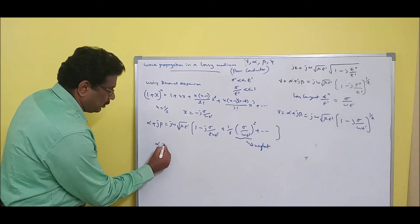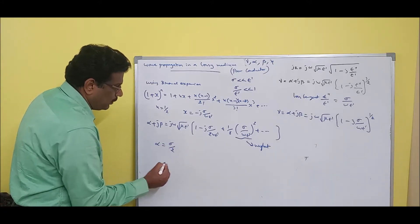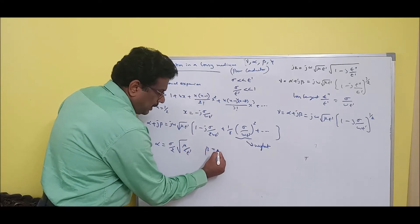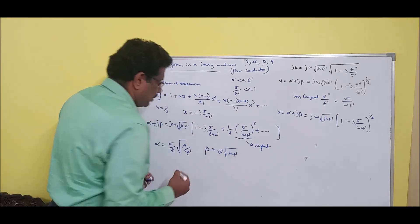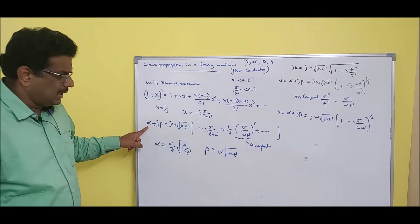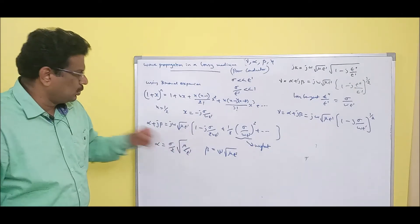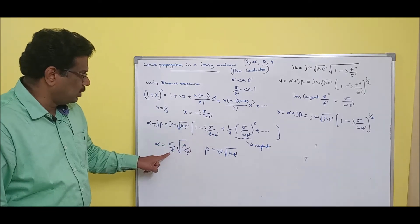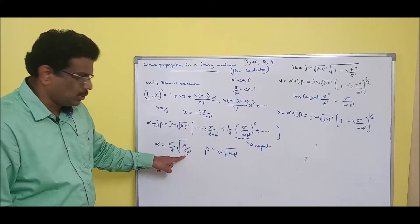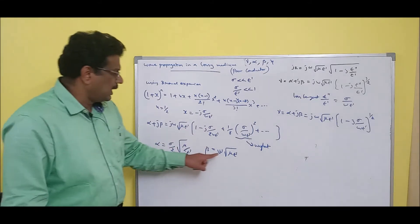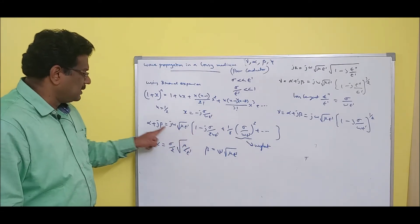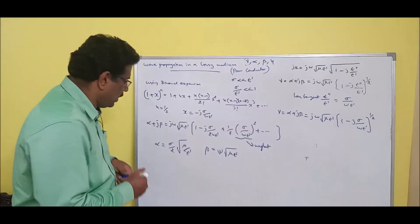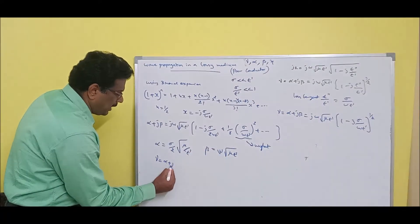If you compare the real term, alpha equals (sigma/2) * root(mu/epsilon-dash). And beta equals omega * root(mu*epsilon-dash). Just recall: alpha is the real term. Multiplying through — j times j gives minus, omega and omega cancel, the 2's match giving sigma/2, and epsilon-dash terms resolve under the root. The imaginary term gives beta. Gamma equals alpha plus j*beta, as discussed.